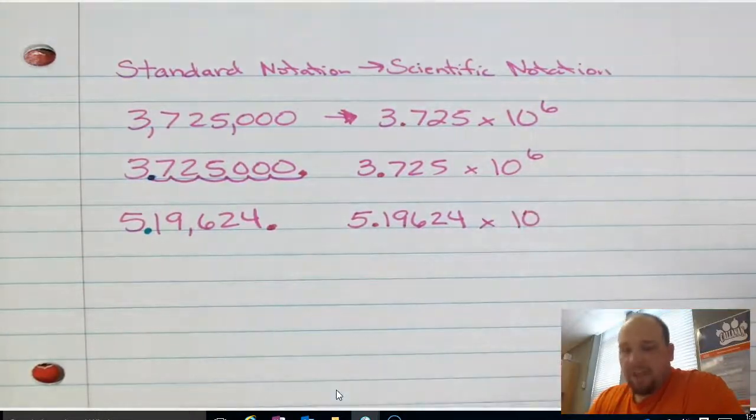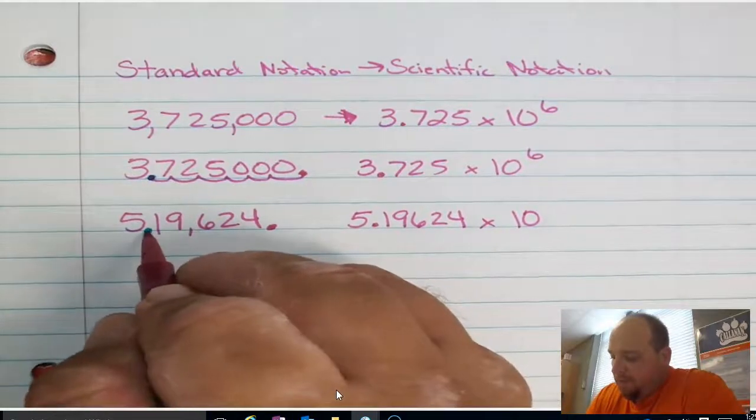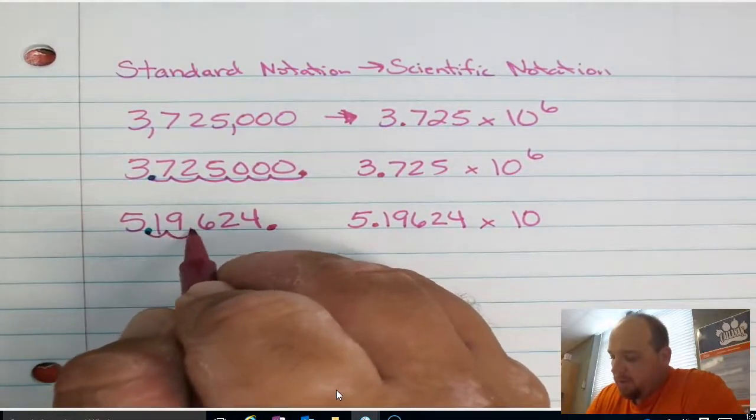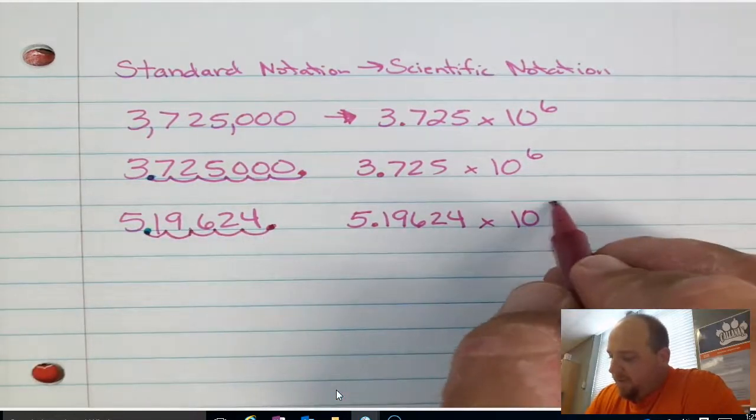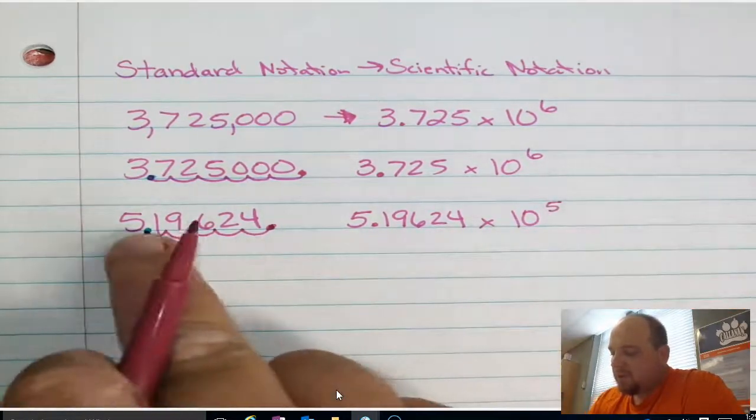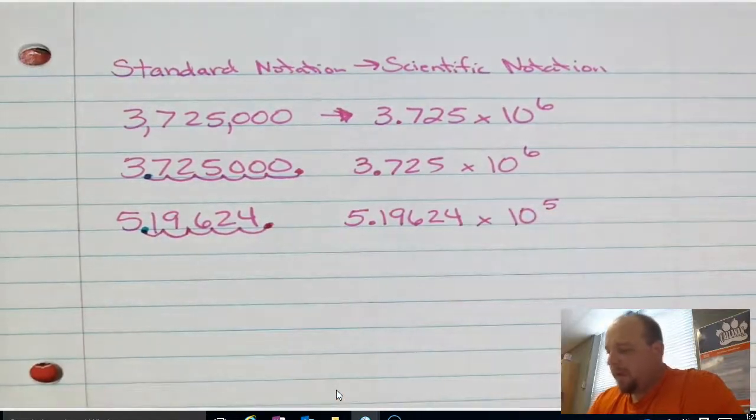Again, I'm going to multiply by a power of 10. So now again, I'm going to count how far did I move from the blue one to the red? 1, 2, 3, 4, 5. I moved 5 locations. And as a result, since I moved to the right from the blue to the red, it's going to be a positive exponent.